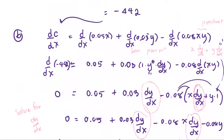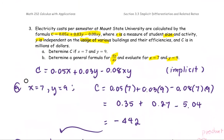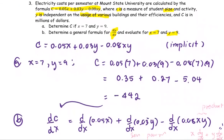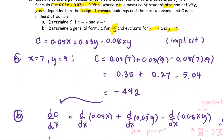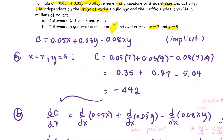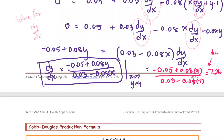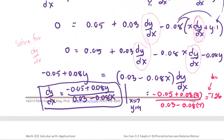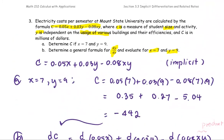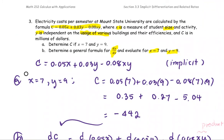What does dy/dx mean? It's the change in Y per the change in X. The negative sign means decreasing. X represents student size and activity, and Y represents the uses of various buildings and their efficiency. So dy/dx is the change in building use and efficiency per the change in student size and activity. If you decrease student size and activity, the use of various buildings and their efficiency will increase, and vice versa — which makes sense.